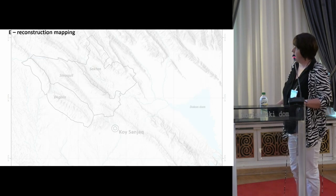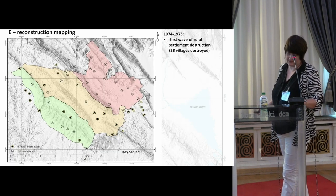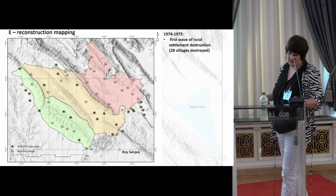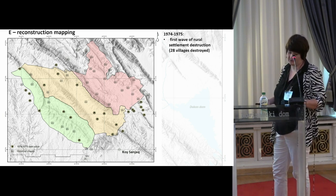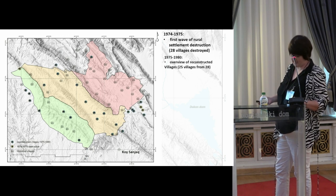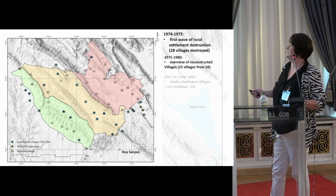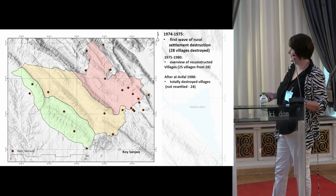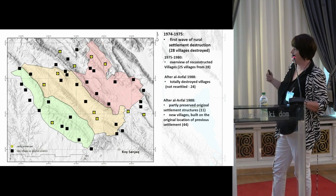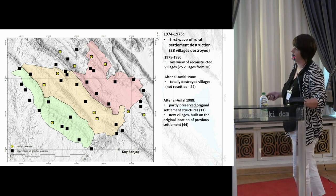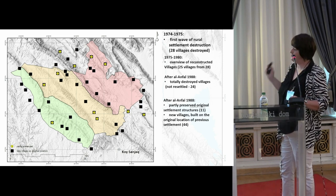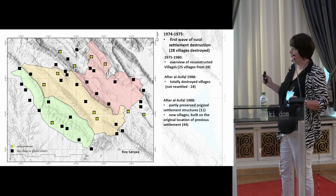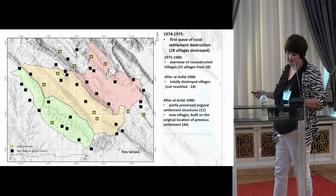Map reconstruction is one of the main outputs of the project - a production of a series of maps showing the spatial development of the villages in time sections before and after the period of the 1970s and 1980s. This is one of the main products: the reconstruction of the landscape and how it was changing, reflecting the violent resettlement of the original inhabitants.